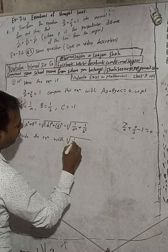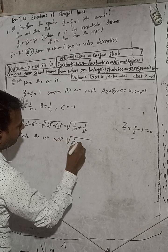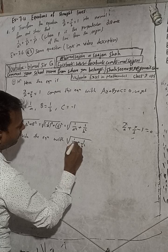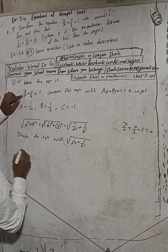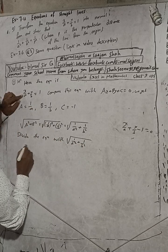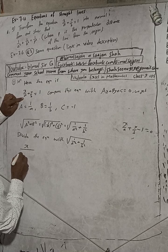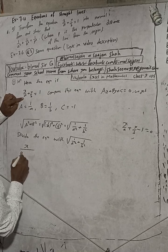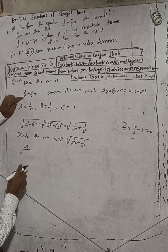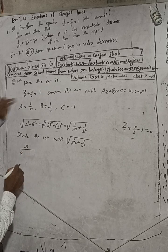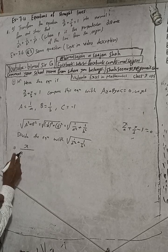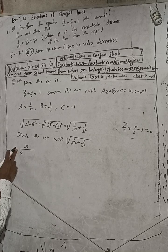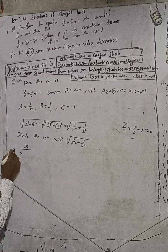Now divide this equation by √(1/a² + 1/b²). Dividing means this is our reference line — the denominator is below and the numerator is above.